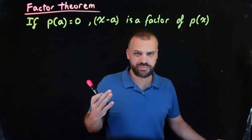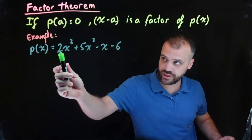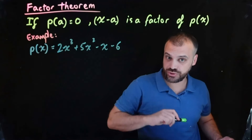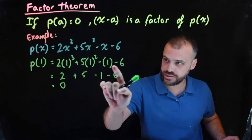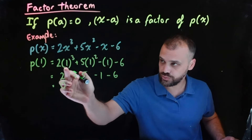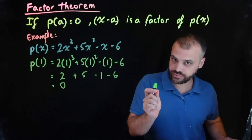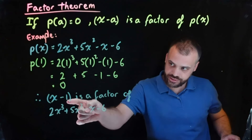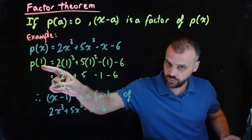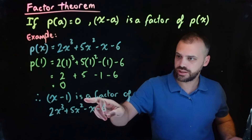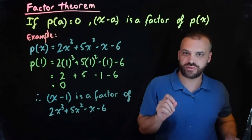What does that mean in an example? Well, if p of x is equal to that, and p of 1 is equal to subbing 1 in, we get 0. Then x minus 1 — not 1, but x minus 1 — is a factor of that.